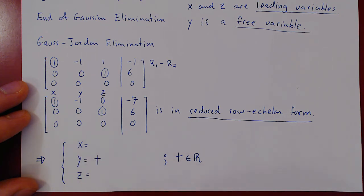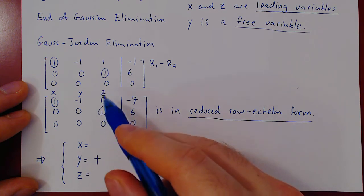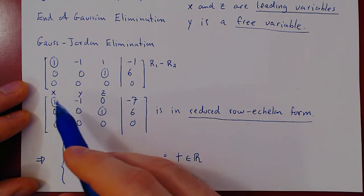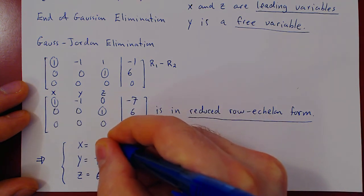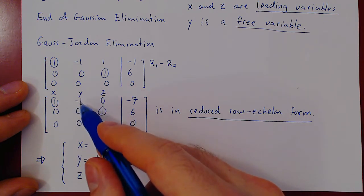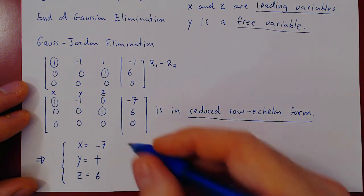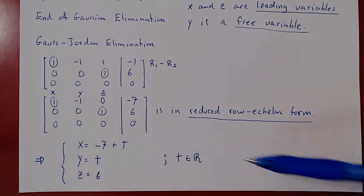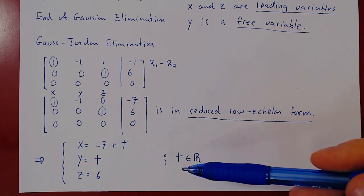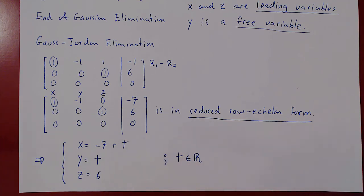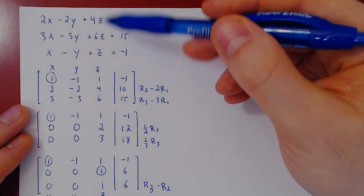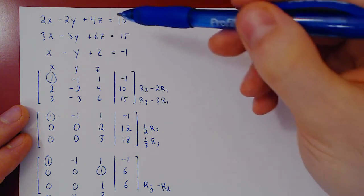Once we've assigned each free variable a parameter, we solve for the leading variables. Using the leading one for z: z equals 6. Using the leading one for x: x equals negative seven plus t, since the negative y on the left becomes positive y on the right, and y is t. So our general solution is: for any choice of t, replacing x by negative seven plus t, y by t, and z by six will give a solution to the original linear system.